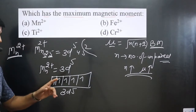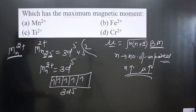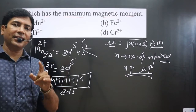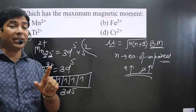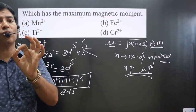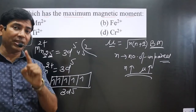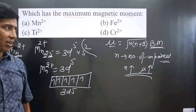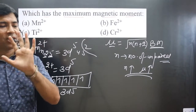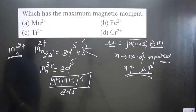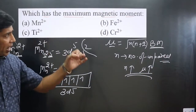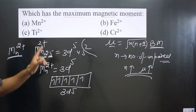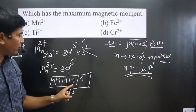Mn²⁺ has five unpaired electrons. Keep in mind: the d orbital can hold a maximum of five unpaired electrons, the p orbital can hold a maximum of three, the s orbital a maximum of one, and the f orbital a maximum of seven. We can already see that Mn²⁺ has the maximum number of unpaired electrons in option A, so it will have the highest magnetic moment.